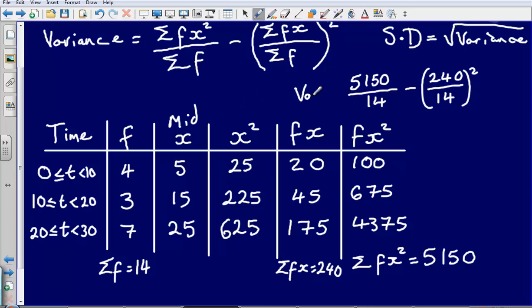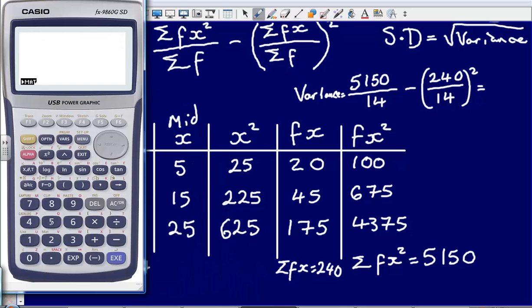So squaring that. Now that's going to give me my variance. Then to calculate my standard deviation, I'm just going to square root my answer for this. So let's calculate the variance first of all, using a calculator. So I've got 5,150 divided by 14. That gives me 367. Then I'm taking away from that 240 divided by 14, squared. And so what does that leave me with? That leaves me with 73.979.